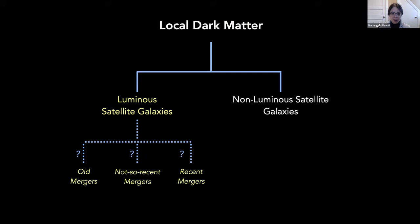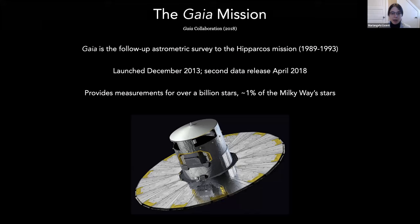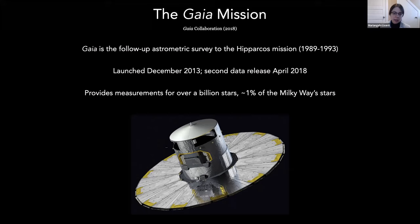The Gaia mission is the follow-up astrometric survey to the Hipparcos mission, which flew from 1989 to 1993. It was launched in December 2013. Everything I'll show is based on the second data release, announced in April 2018; the third data release is coming soon. What's exciting about Gaia is that it provides measurements for over a billion stars in the galaxy — the full six-dimensional phase-space coordinates for every star: three position coordinates and three velocity coordinates. This constitutes about one percent of the Milky Way's stars, far more phase-space information than we've ever had.